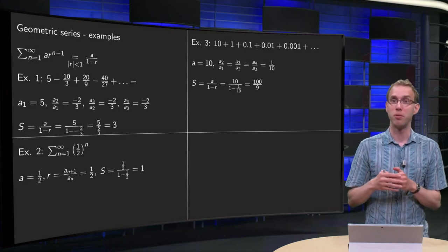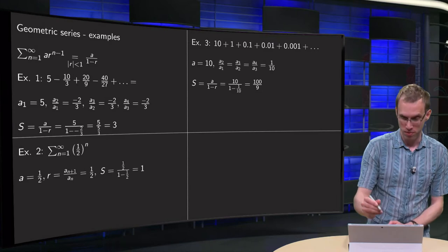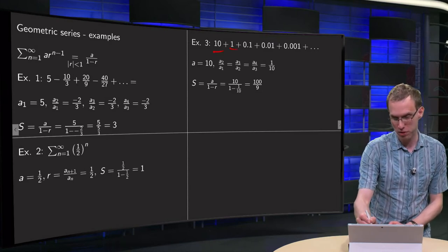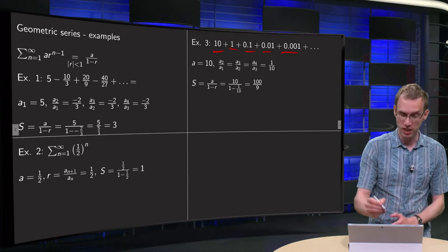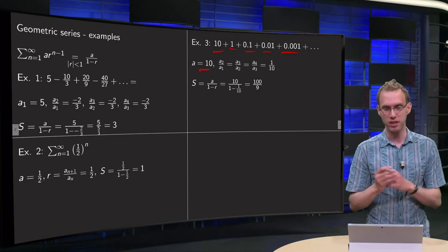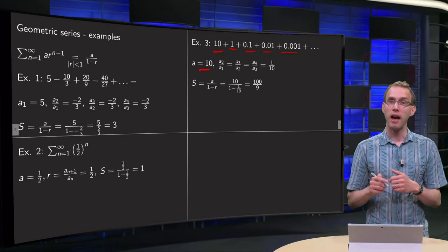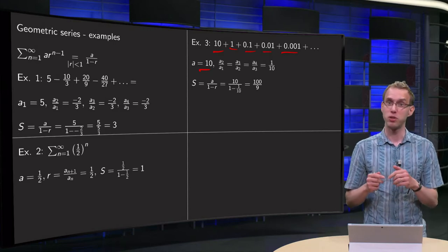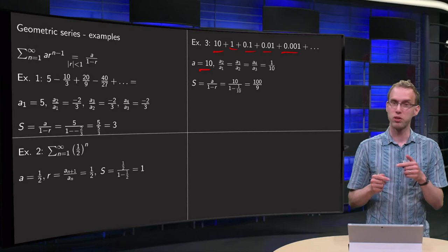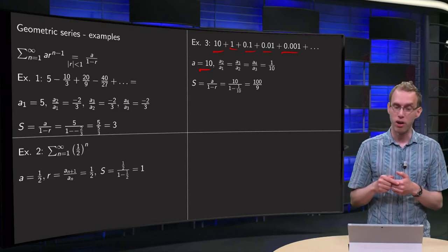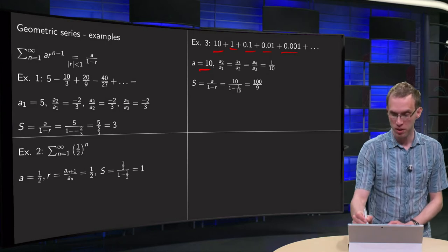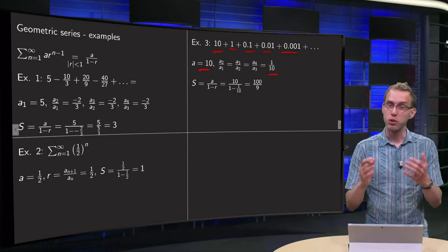but the sum of all the terms will be finite as we will see. We will have to add 10 plus 1 plus 0.1 plus 0.01, etc. Because what we see is that the first term is 10, that is clear. And then a2 over a1 equals 1 over 10, a3 over a2 equals 0.1 over 1, again 1 over 10, a4 over a3 is again 1 over 10, so this ratio equals 1 over 10,